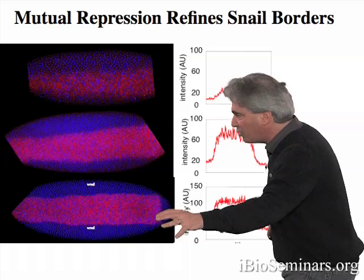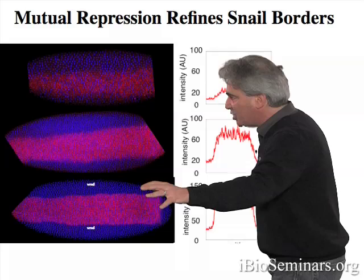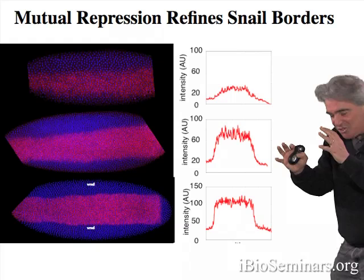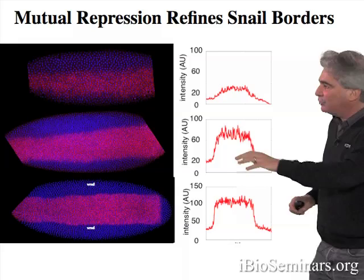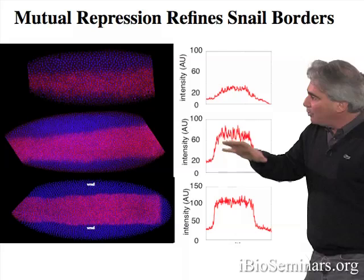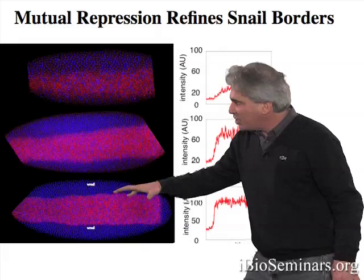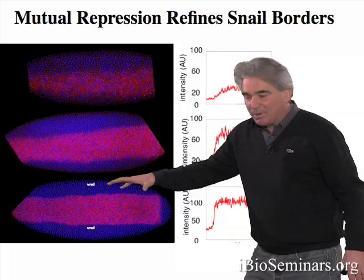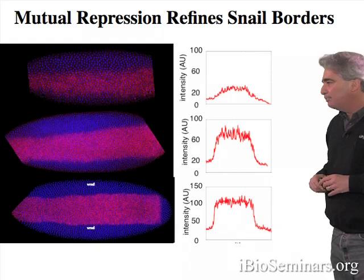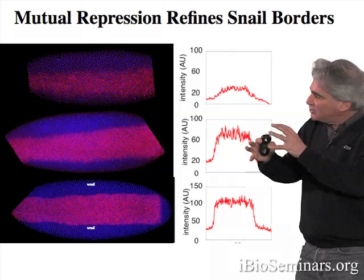The idea is that snail gets turned on, it represses VND, restricts VND to the lateral neurogenic ectoderm, and then VND returns the favor by feeding back on snail, repressing it to sharpen that border. This is a classical bistable threshold switch, with snail and VND dueling to form that sharp border. It's a dangerous mechanism, because it depends on snail being very quickly expressed to achieve critical threshold levels in the early embryo to keep neurogenic repressors out of the mesoderm. If you don't make enough snail at the right place and the right time, the mesoderm is not formed and is transformed into neurogenic ectoderm.